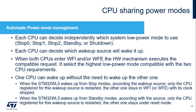Each CPU can decide independently which low-power mode to use — Stop 0, Stop 1, Stop 2, Standby, or Shutdown — and which wake-up source (RTC, sub-gigahertz radio, GPIO, or peripheral) will wake it up. When both CPUs enter WFI and/or WFE, the hardware mechanism executes the compatible request, selecting the highest low-power mode compatible with the requirements from both CPUs. One CPU can wake up without the need to wake up the other one, if not required.